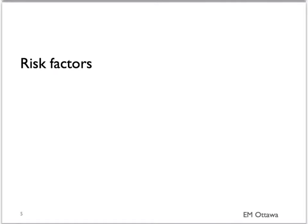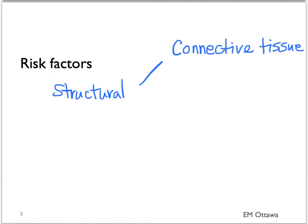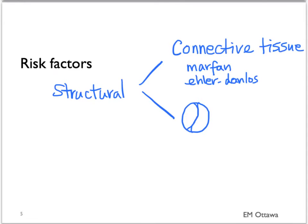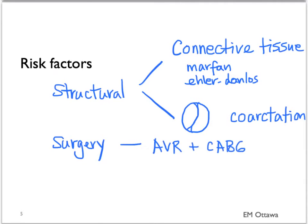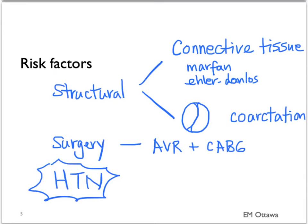What are the risk factors for aortic dissection? As you can imagine, anything structural will cause the media to be more likely to tear. It can include things like connective tissue disease, such as Marfan's and Ehlers-Danlos syndrome. It can also involve an aortic valve that's not normal, such as a bicuspid valve and aortic coarctation. Surgery, such as aortic valve replacement and bypass surgery, increase the risk. The most important cause, however, is hypertension — the number one risk factor for aortic dissection.